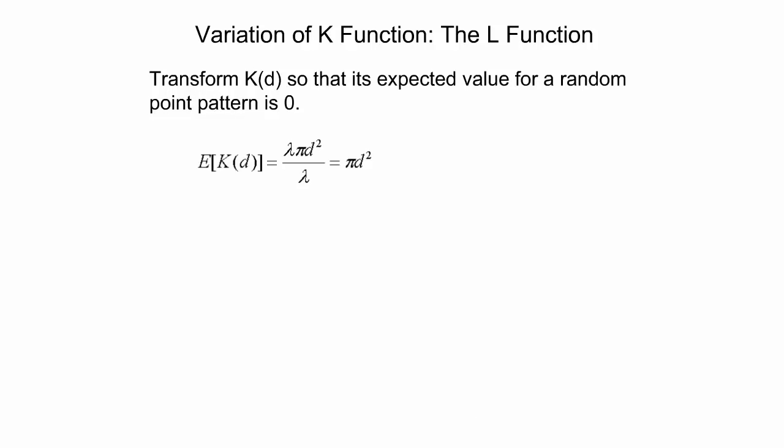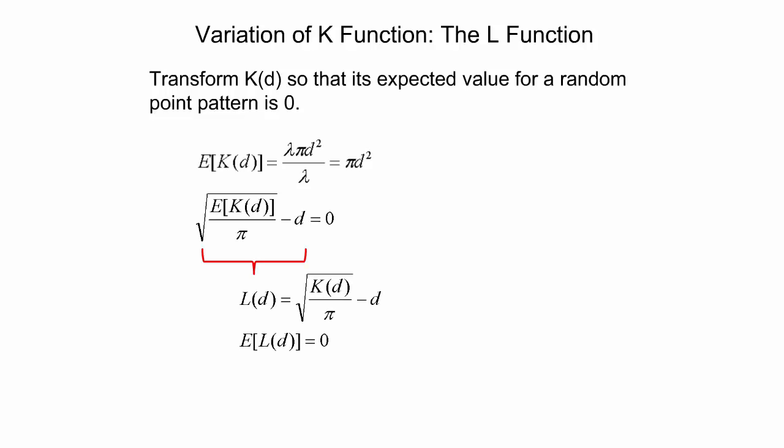Since the expected K function grows by the squared distance, both the expected and observed values of the K function become large as d increases. As a result, small differences can be difficult to see between expected and observed values in a data plot. One way around this problem is to calculate a function derived from K that has an expected value of 0 for a random point pattern. To convert the expected value of K to 0, one can divide by pi, take the square root, and subtract the distance under consideration. This transformation of K values gives the L function.